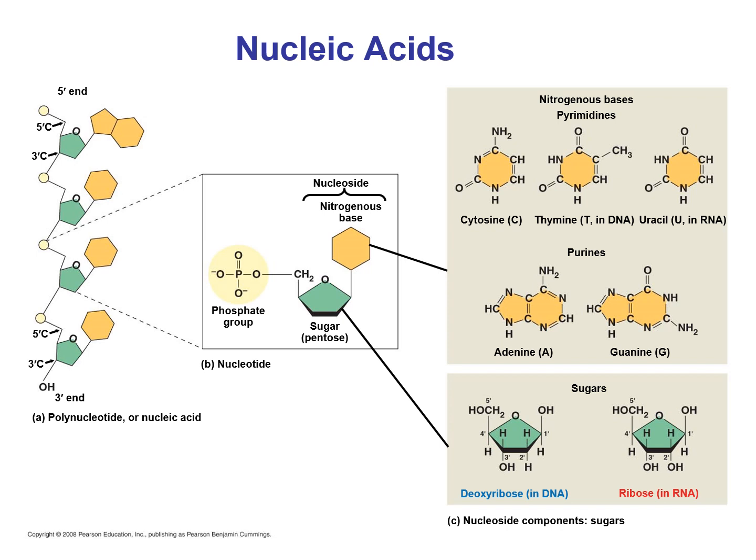We have a number of different nitrogenous bases. In DNA we have cytosine, thymine, adenine, and guanine. In RNA, instead of thymine we have uracil, and then we have the other three. There are two types of sugar: in DNA we have something called deoxyribose, and in RNA we have ribose.